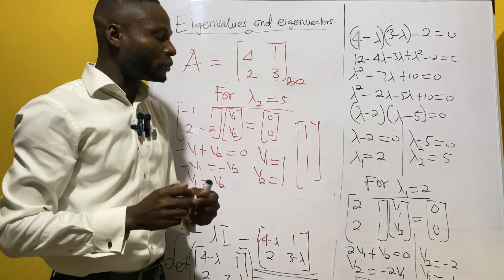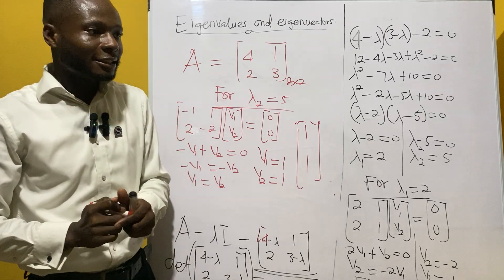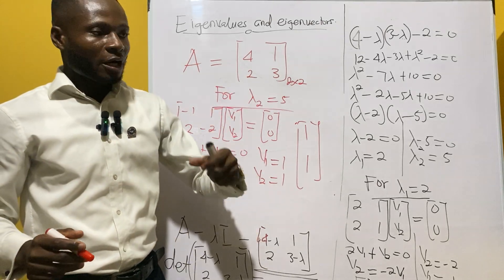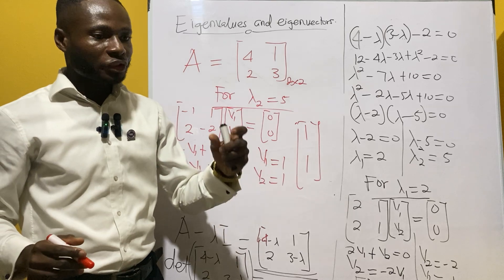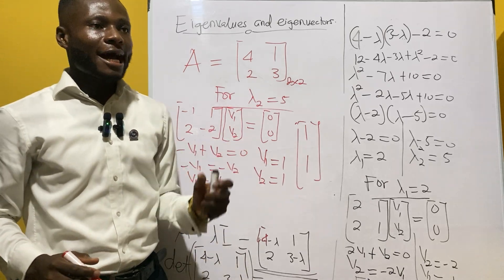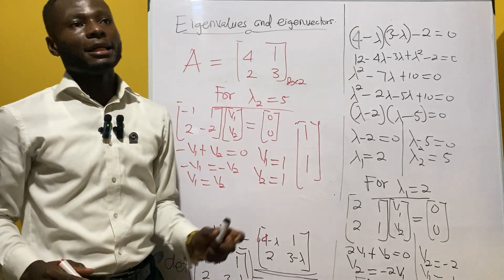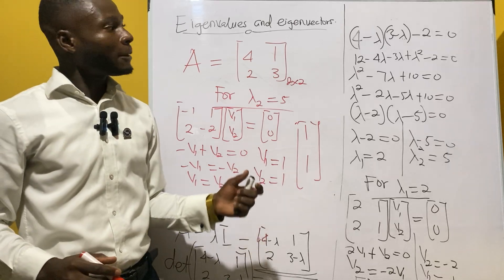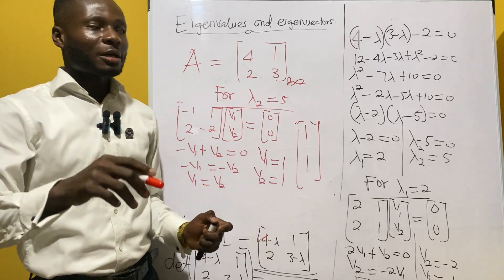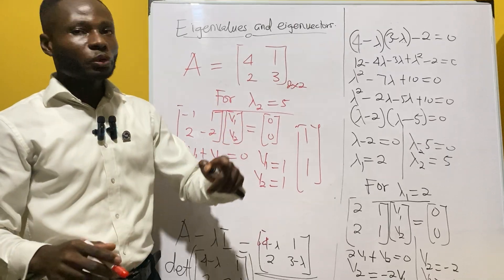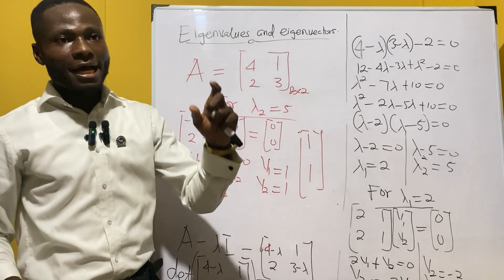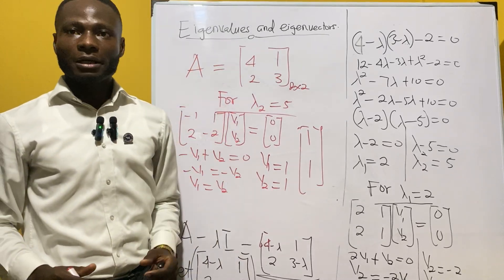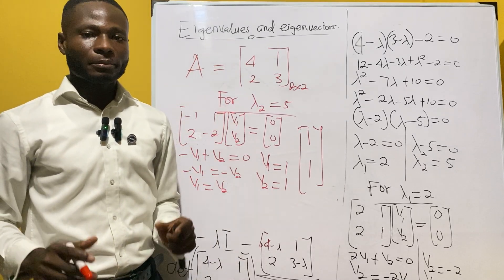So ladies and gentlemen, this is the procedure we follow to find the eigenvalues and the eigenvectors of a two by two matrix. Please don't forget to subscribe, because the next video is going to be how we can find the eigenvectors and eigenvalues of a three by three matrix. Bye!